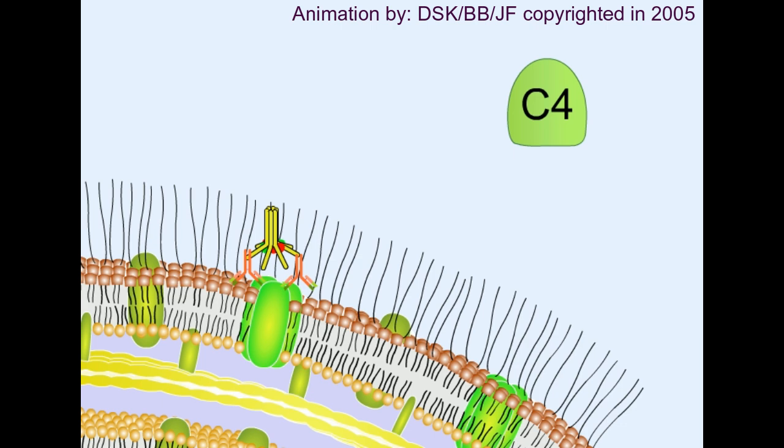Then C4 complement protein, which is a globular protein containing a thioester bond inside it, will come in. It will be cleaved by this qrs into C4a and C4b. This C4b portion is released and C4a portion will be diffused. This C4a is acting as an anaphylotoxin.